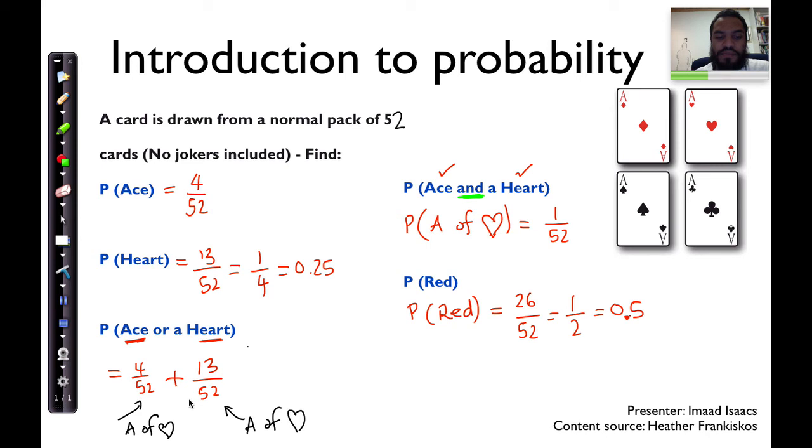So a very important thing must be done here. We must subtract. We must subtract one of the 52 cards, and that is the ace of hearts, because it was double counted. It was counted twice - it was counted as part of the aces, and it was counted as part of the hearts. But we should only include it once. And so 4 plus 13 is 17, 17 minus 1 is going to be 16. 16 out of 52 cards.